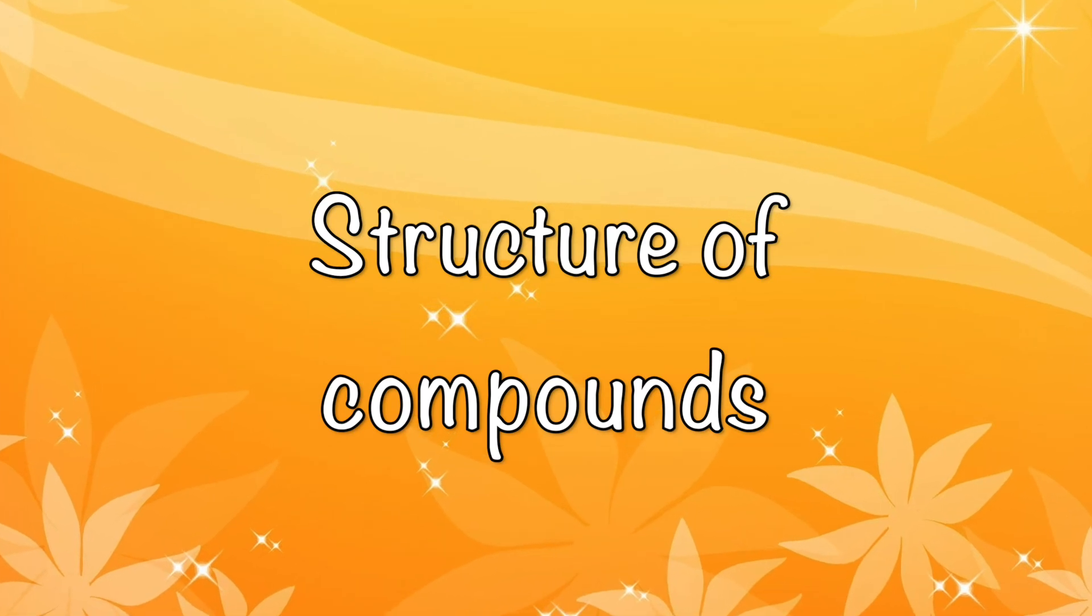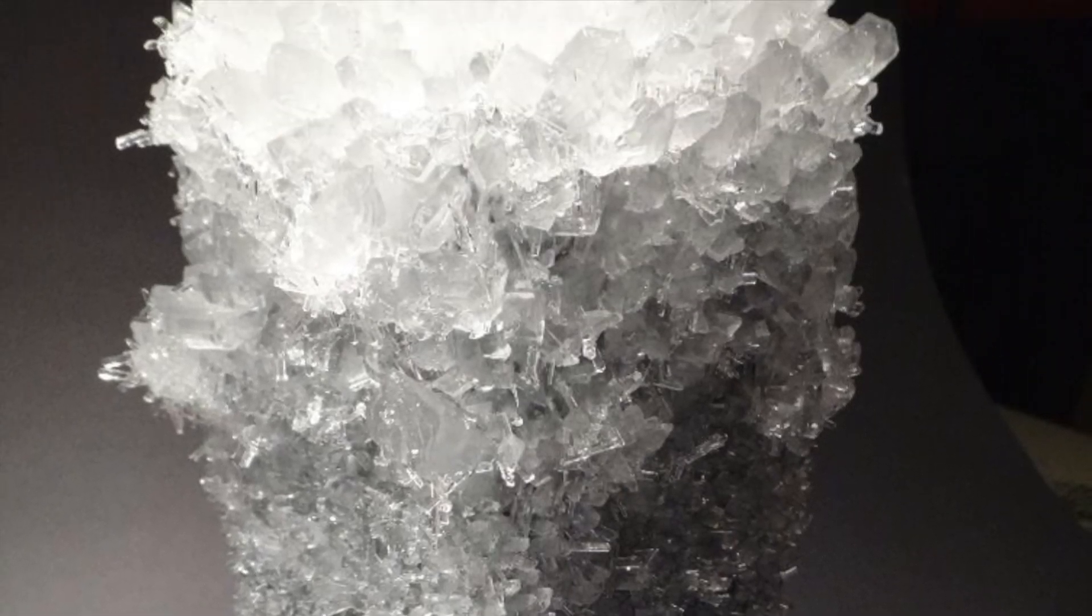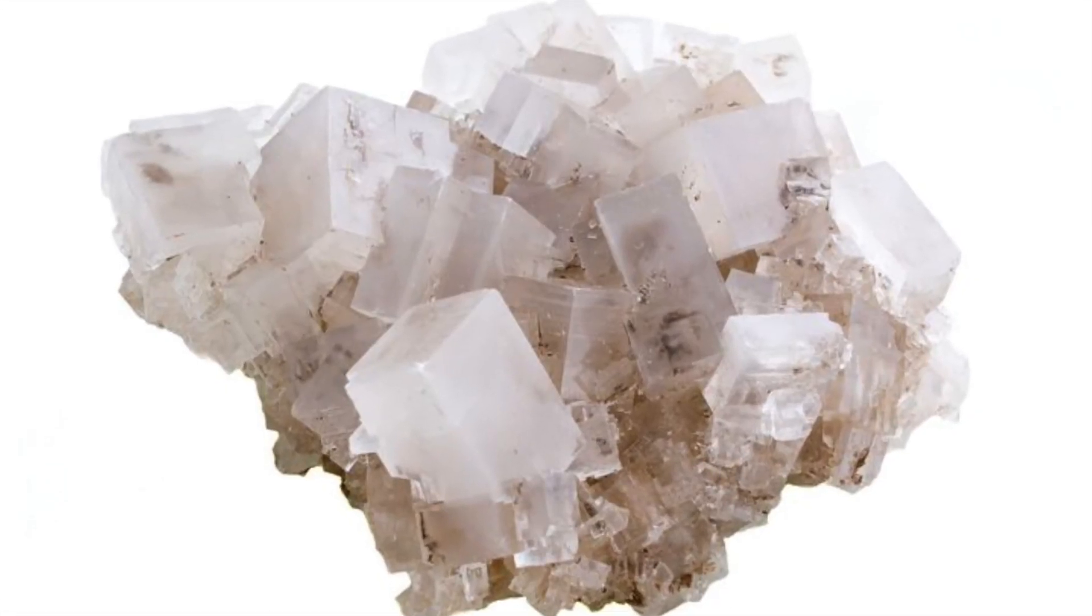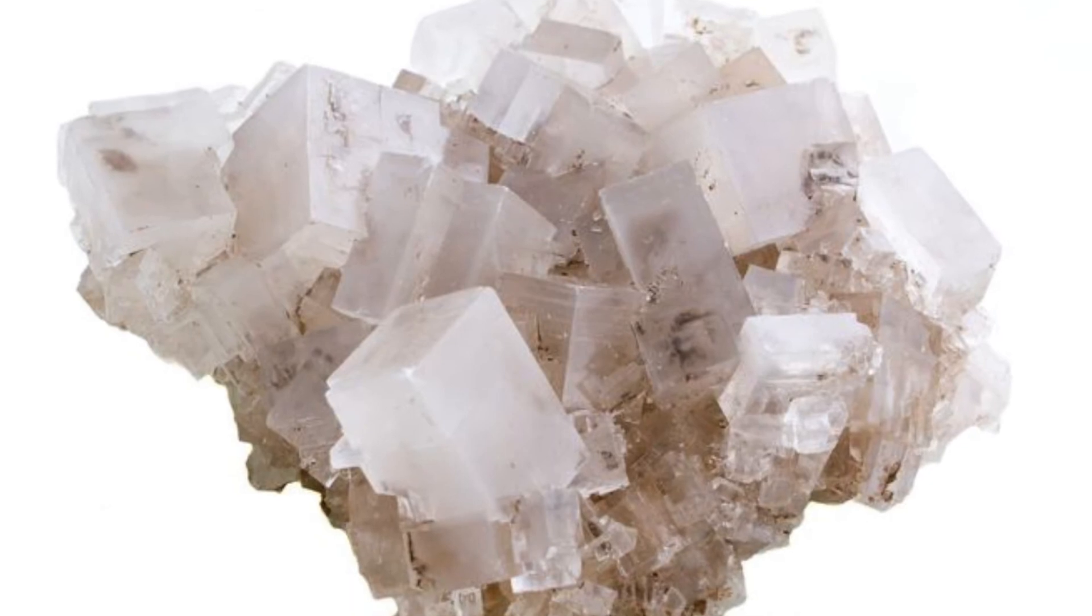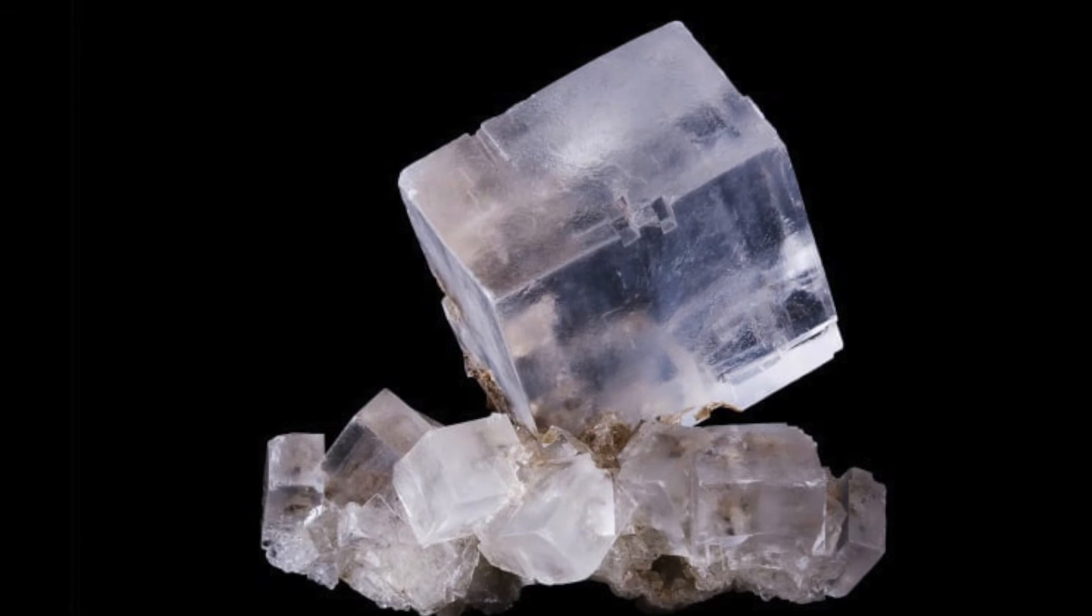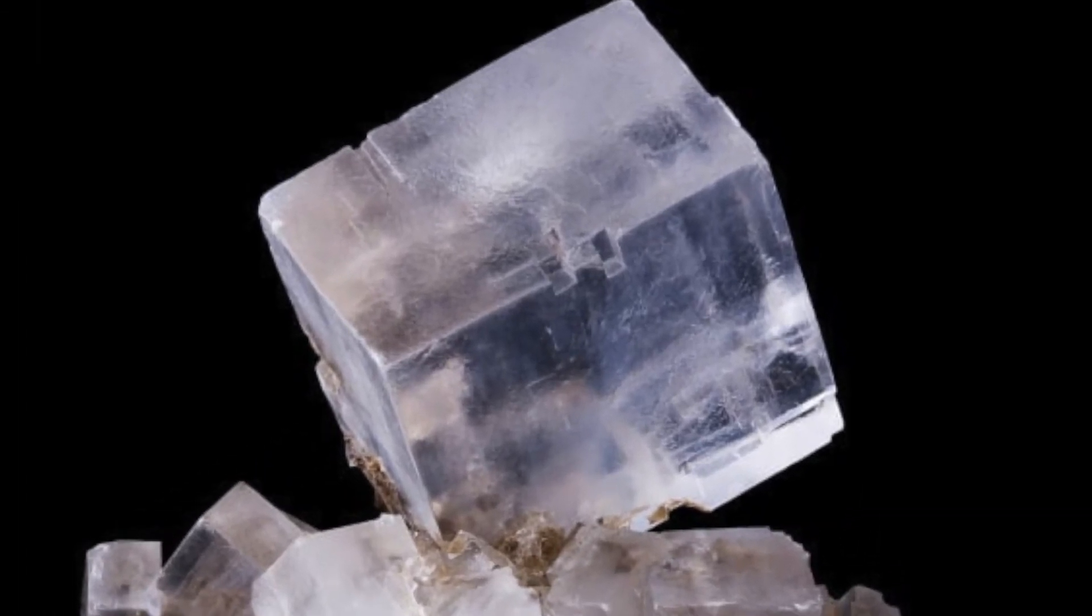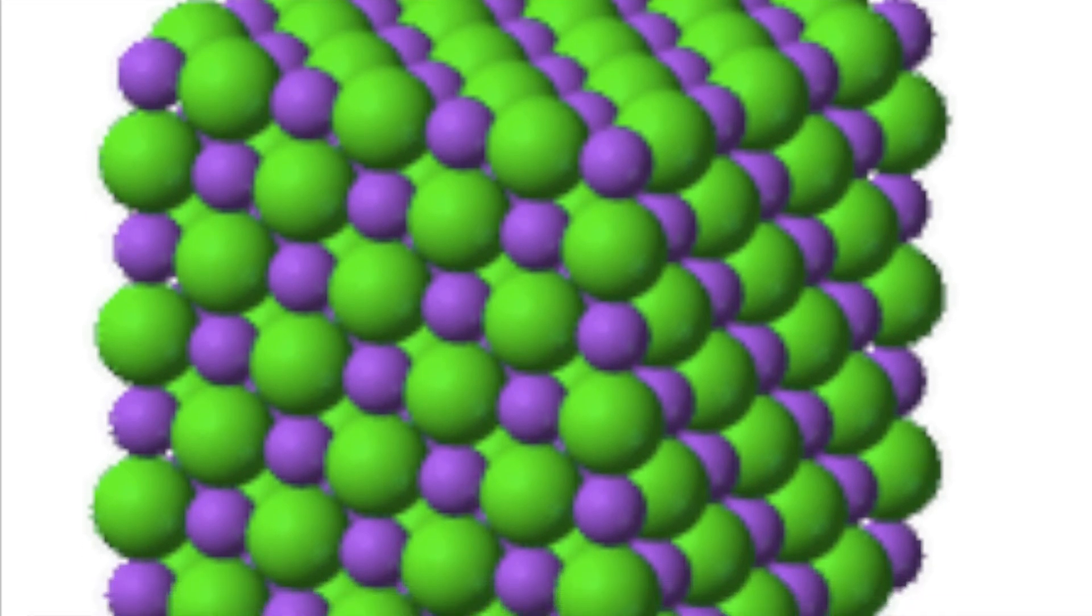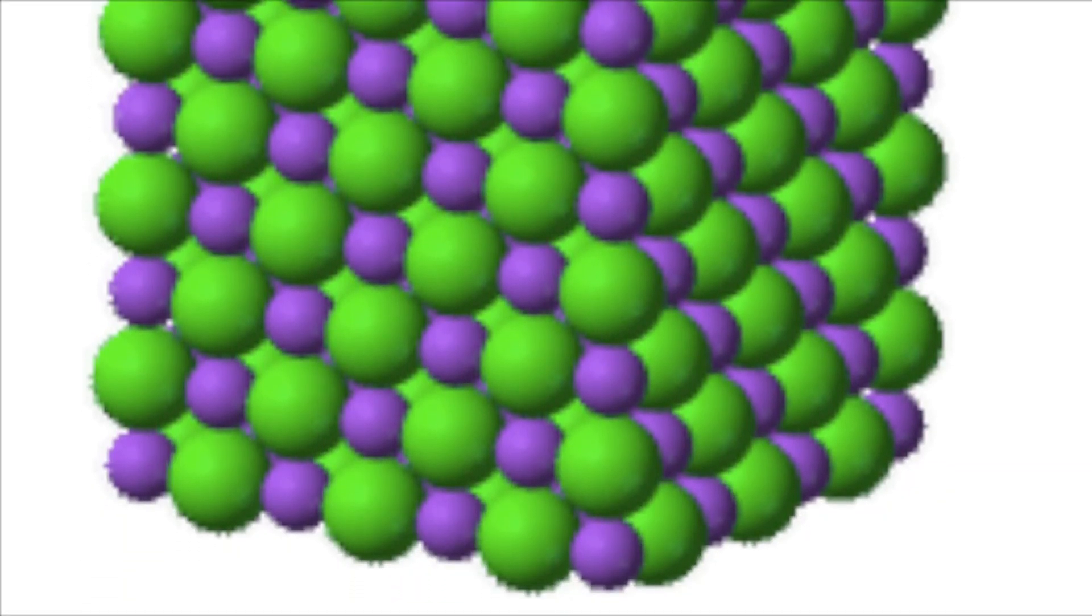Structure of compounds. Compounds like sodium chloride form structures called crystals. A crystal is a rigid framework of many ions that lock together in a repeating pattern. Ions are electronically charged forms of atoms. You can see a crystal of sodium chloride in the figure here. It's made up of many sodium and chloride ions arranged in a rigid framework.